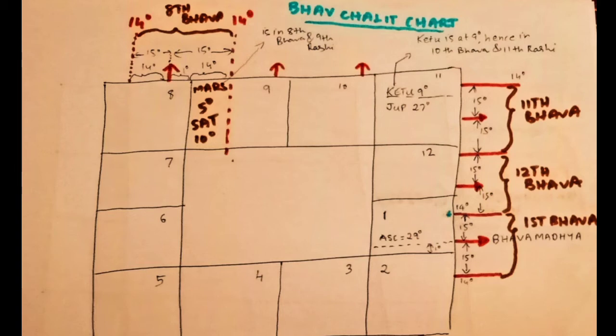Now what happens in the Bhava chart? If you look at the 11th Rashi, that is the sign of Mithun, you can see two planets there: Ketu at 9 degrees and Jupiter at 27 degrees. These are in the 11th Rashi from Leo. But if you see the degree of Ketu, it is 9 degrees. The 11th Bhava starts at 14 degrees in the sign of Mithun or Gemini, whereas Ketu is at only 9 degrees. So actually Ketu is not in the 11th Bhava — Ketu is in the 10th Bhava. Jupiter's degree is 27 degrees, so Jupiter lies in the 11th Bhava.